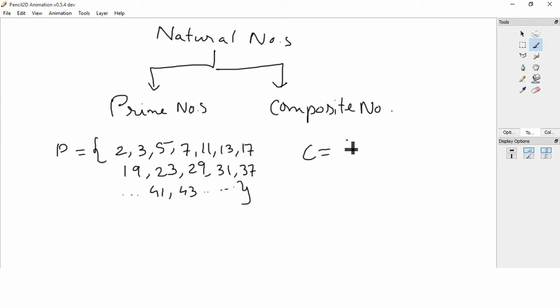And composite numbers are those which are divisible by other numbers also, not just 1 and themselves. For example, 4 which is 2 times 2. If I write 6, factors of 6 are 1 times 6 and also 2 times 3, so 6 is in the 2 table and 3 table, so 6 is a composite number. Then 9, which is 3 times 3, and 15 which is 3 times 5.